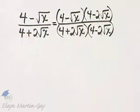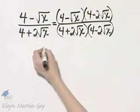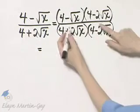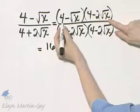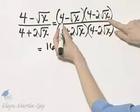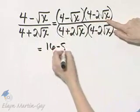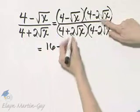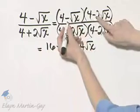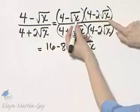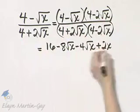Now let's start multiplying. We can think of this in the numerator as a binomial times a binomial, so I'll use the FOIL order of multiplying. First times first is 16. That's minus 8 square root of x minus 4 square root of x. And then last times last — square root of x times square root of x is x, with the negative times negative giving positive 2 — so plus 2x.